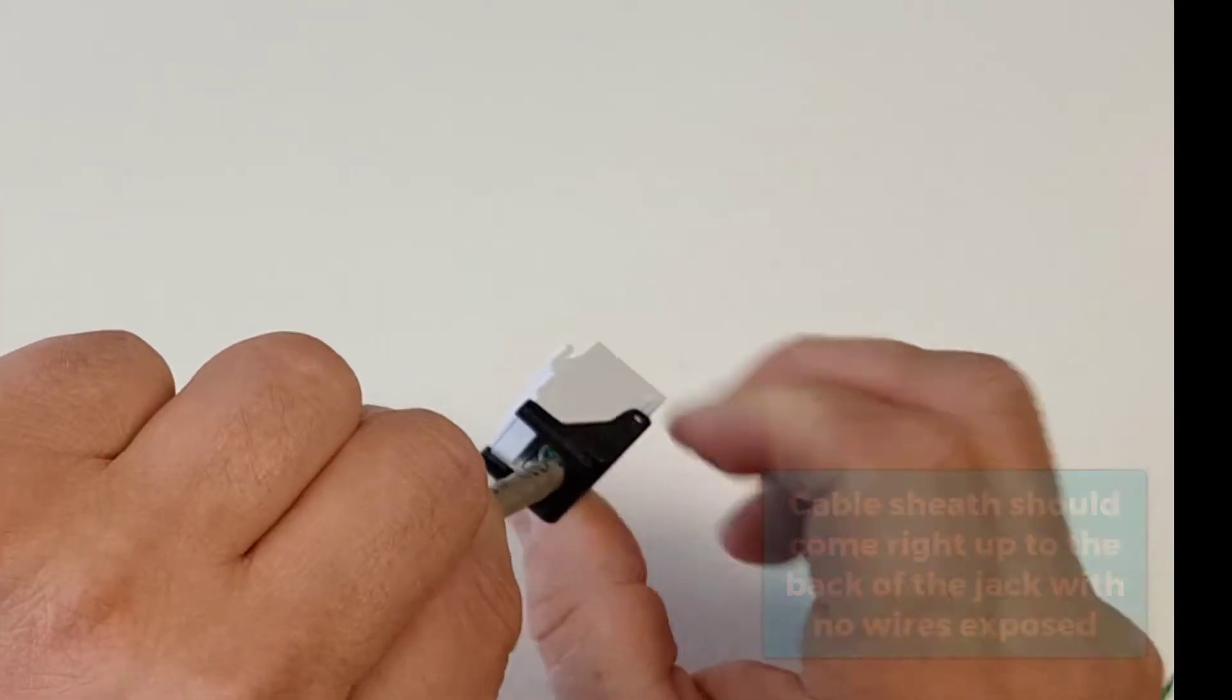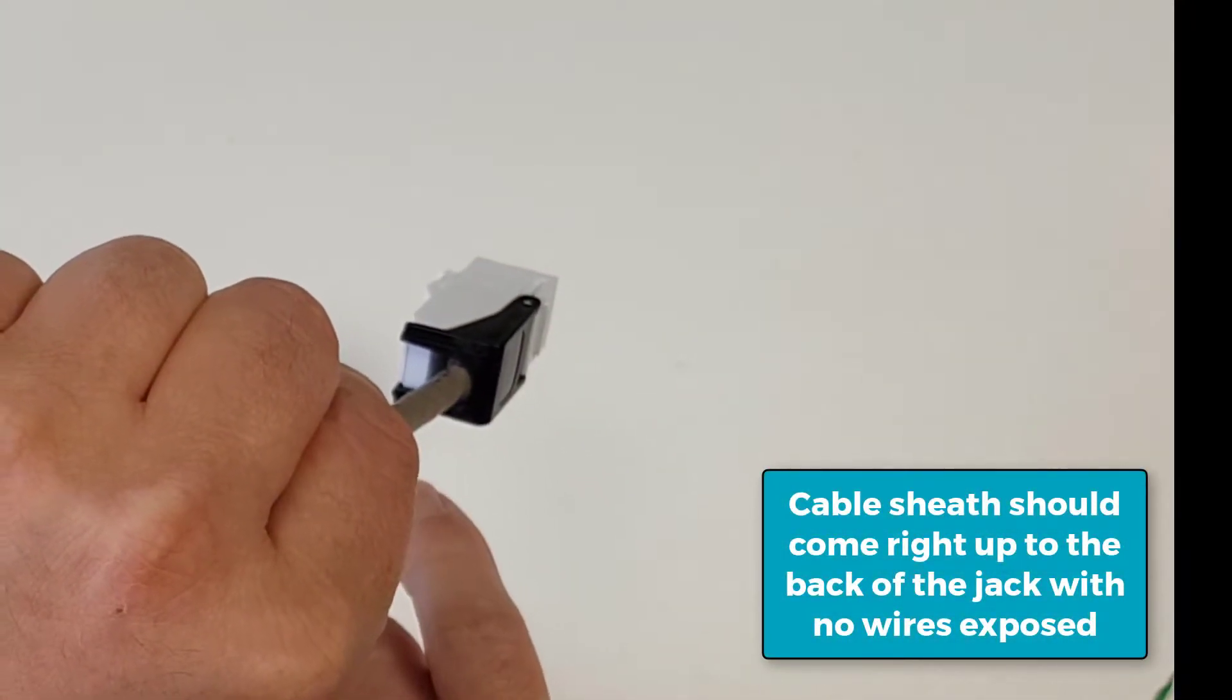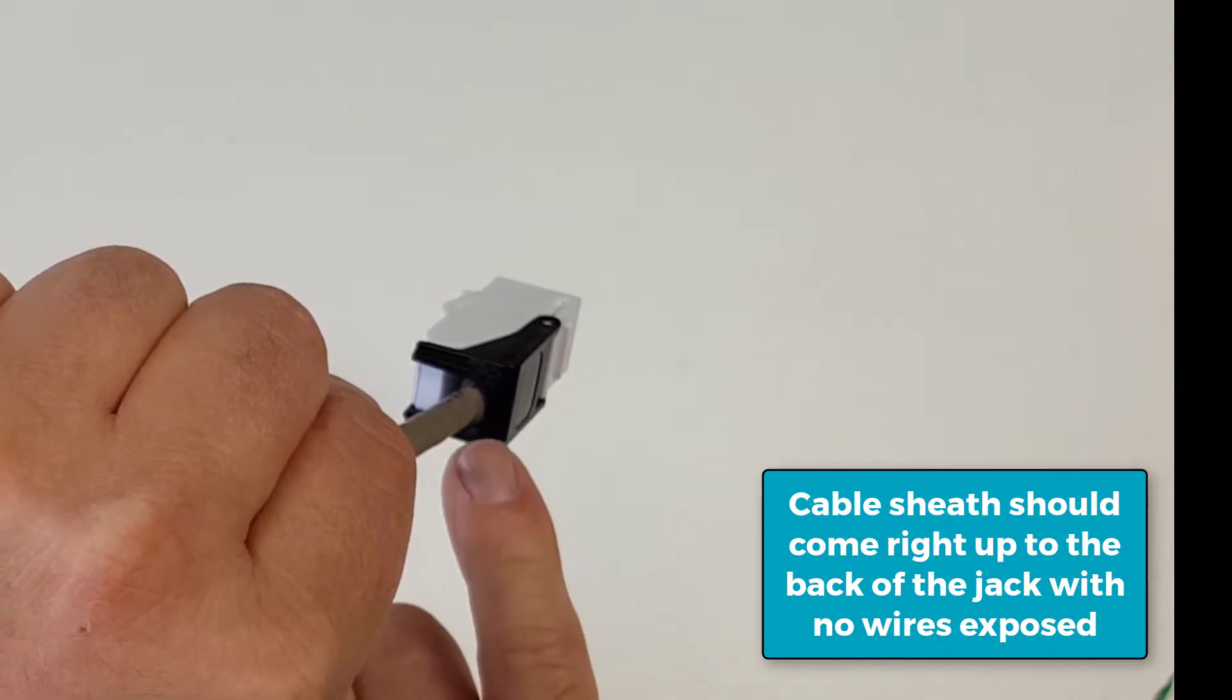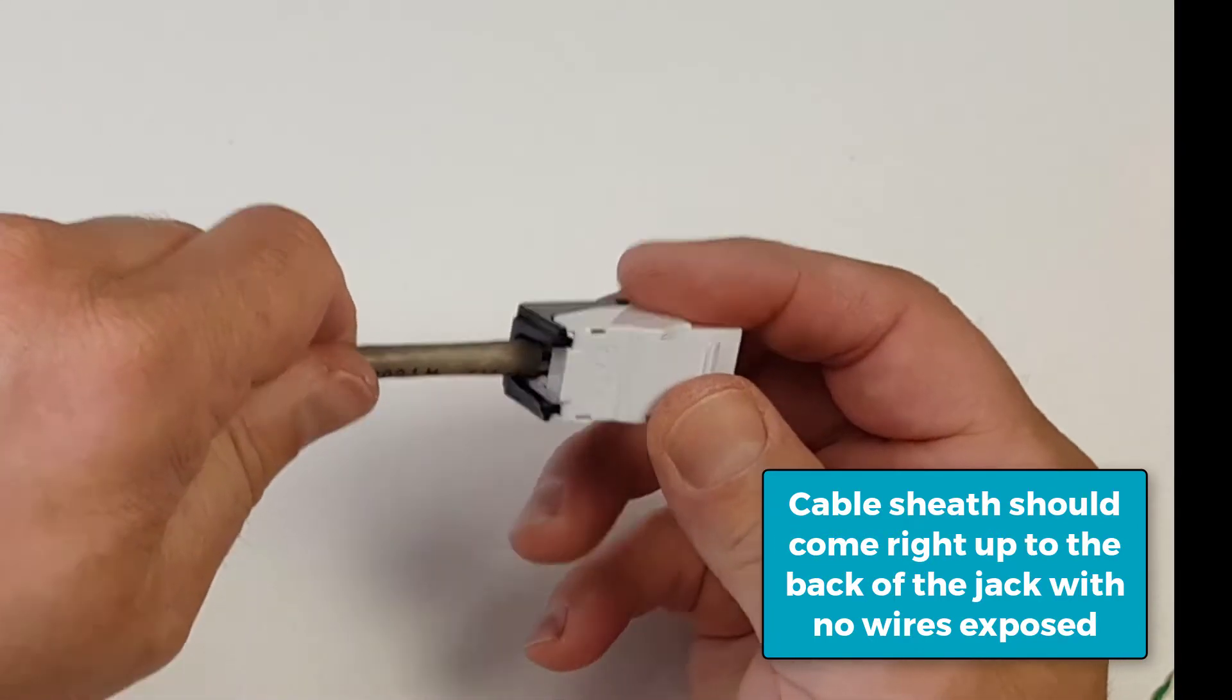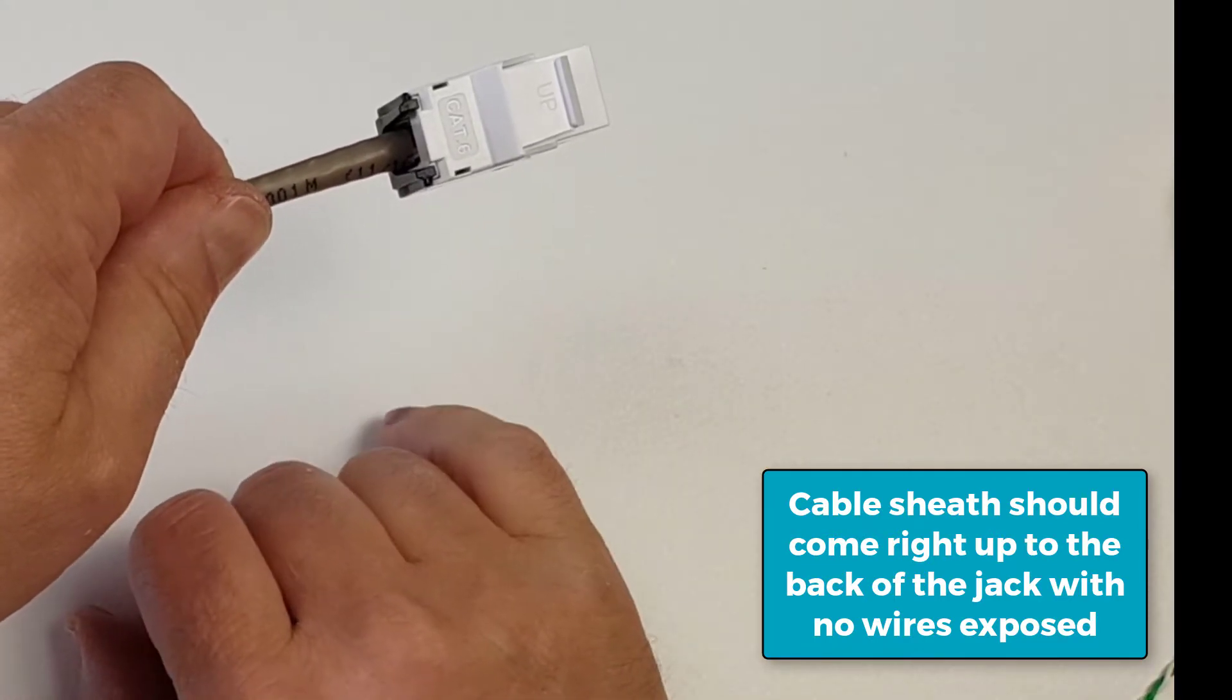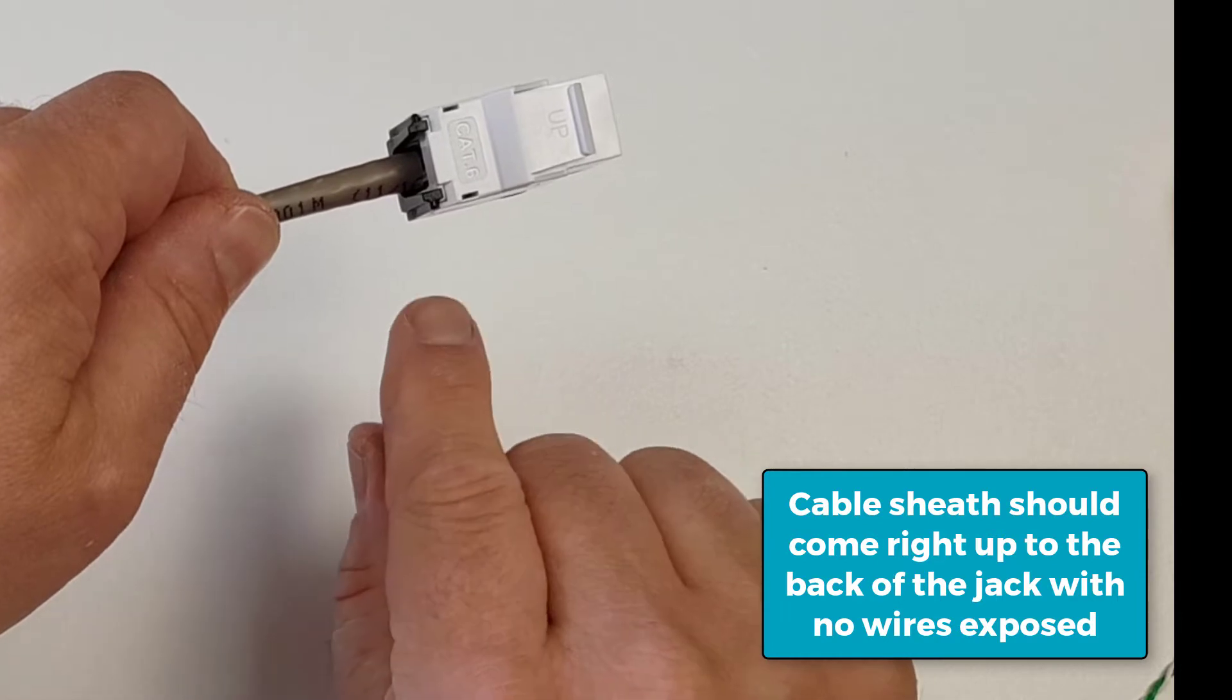We should have no exposed wires out the back. So when we are putting this in, we make sure that our sheath goes all the way in as far as possible. That just keeps all of our twists as much lined up as possible.